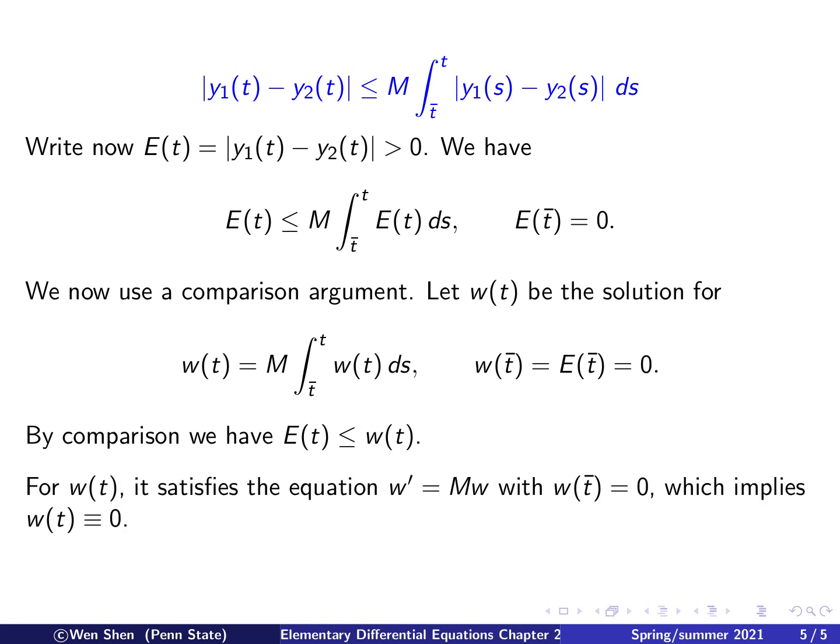Finally, what is w of t? It satisfies this equation. We can differentiate it and easily get that w prime is M times w, where M is the constant, and the initial condition is zero. We know that the solution for this linear problem is just w of t is identically equal to zero. Now since w of t is zero, and we know that E of t has to be less than or equal to w of t, and E of t is also bigger than or equal to zero, therefore we conclude that E of t is also identically zero. That means the solutions y1 and y2 are identical to each other. Therefore, we conclude the uniqueness of the solution.